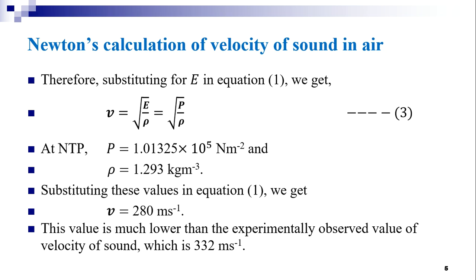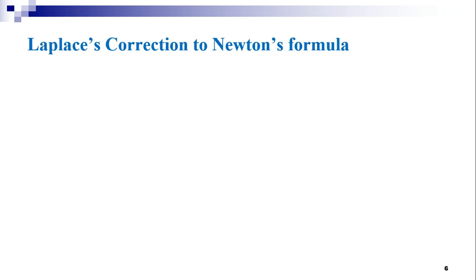There was a discrepancy — an error of about 16 percent was found between the theoretical and experimental values. This implies a correction must be made to Newton's equation. Since Newton could not explain the discrepancy correctly, the correct explanation was given by Laplace. Let us look into Laplace's correction to Newton's formula.